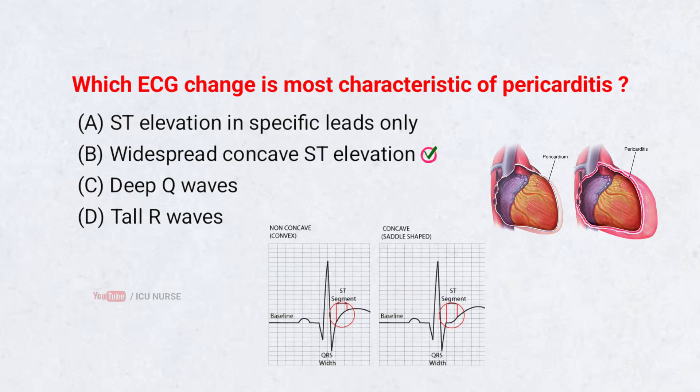Pericarditis typically produces diffuse concave ST elevations — that is, smiling-shaped elevations across many leads — rather than the localized changes seen in MI. This pattern reflects inflammation of the pericardium affecting the heart surface globally.